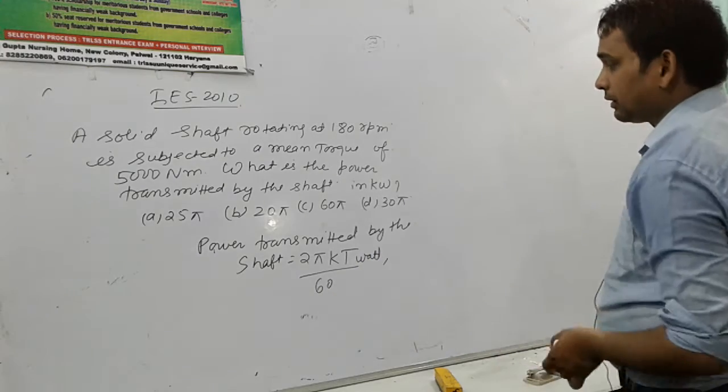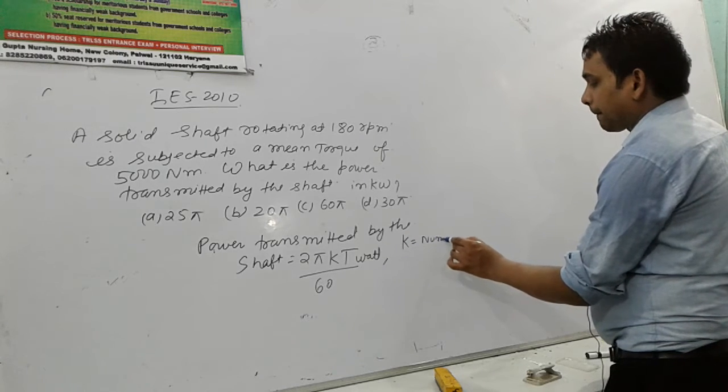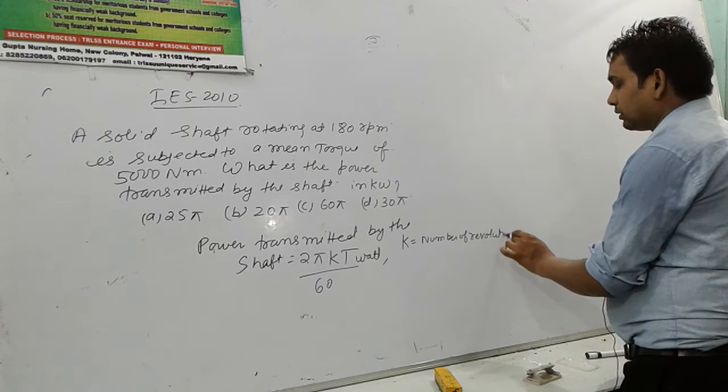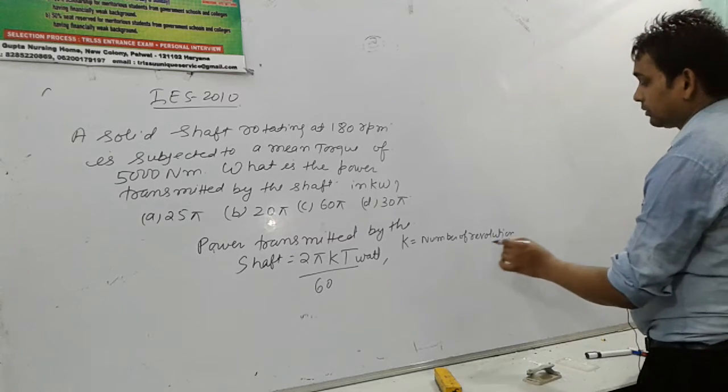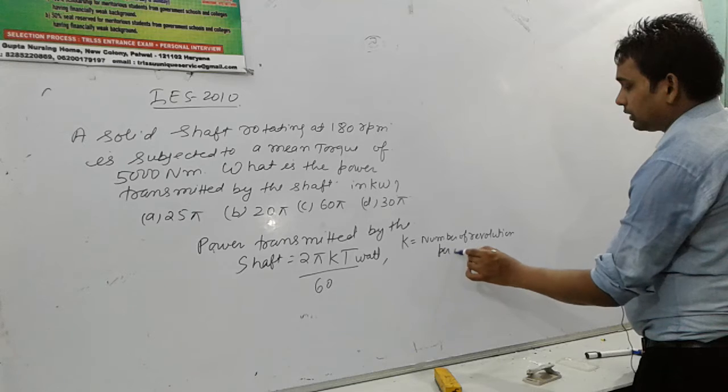Where N is the number of revolutions, revolutions per minute, revolutions per minute of the shaft.